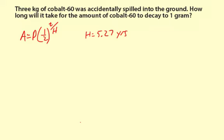Three kilograms of cobalt-60 was accidentally spilled into the ground. How long will it take for the amount of cobalt-60 to decay to one gram? This is a half-life calculation. The half-life for cobalt-60 is 5.27 years, so we're going to use that. The initial amount, the principal, is three kilograms or 3,000 grams.